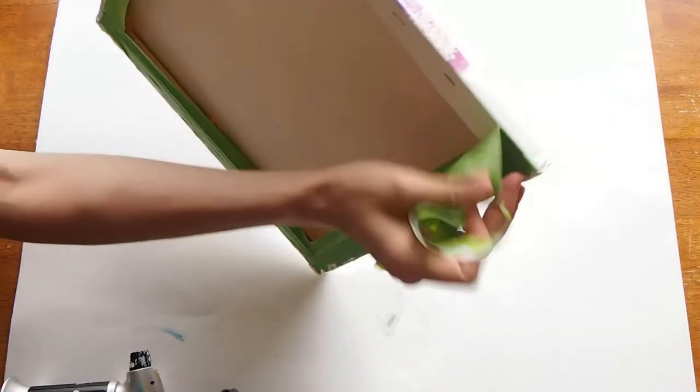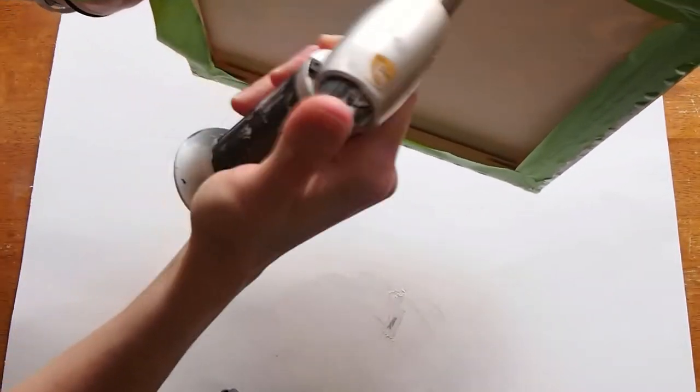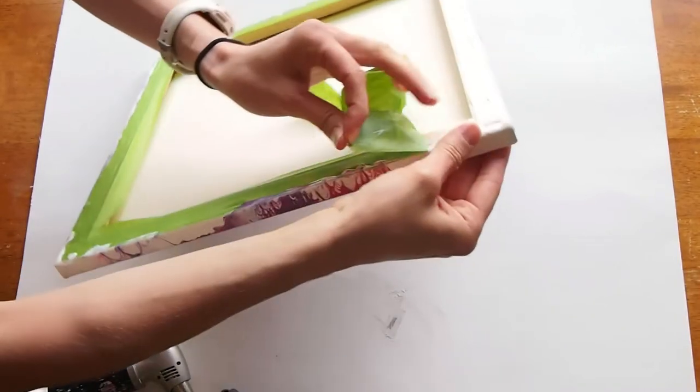So all you do here is take your torch and run it along the edge of the canvas where the tape meets the paint. Keep the torch moving and don't hold it too close. The heat softens the varnish to allow the tape to be easily peeled away.